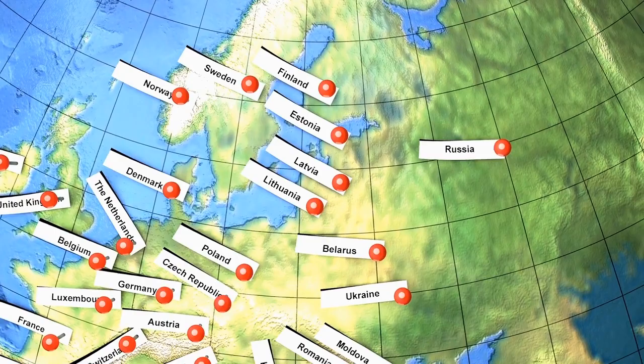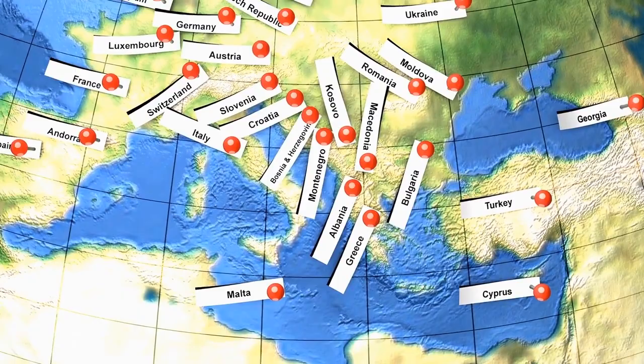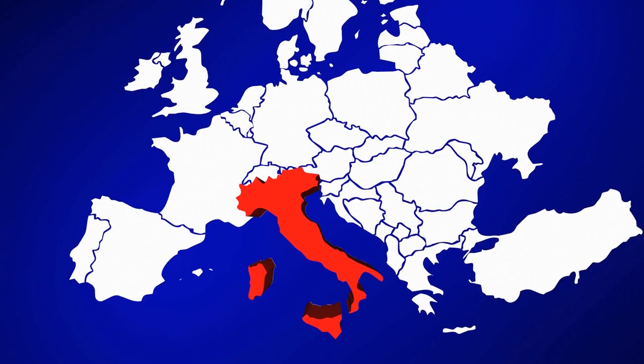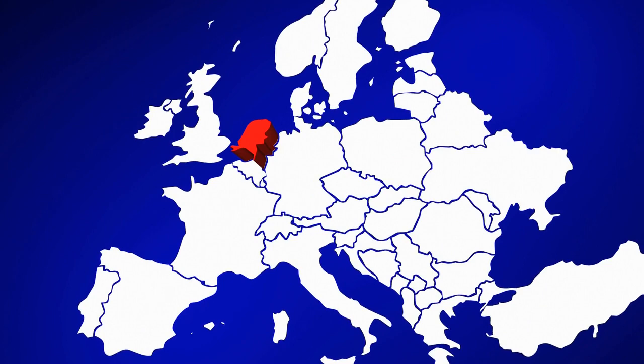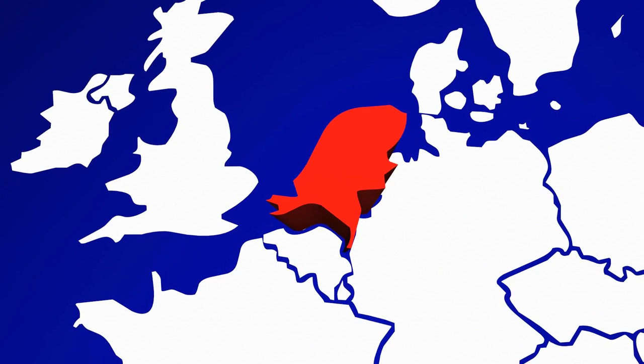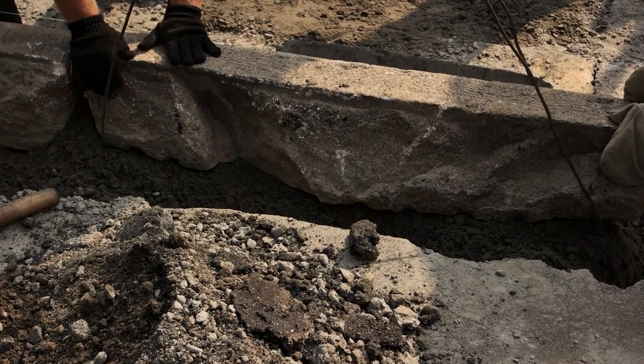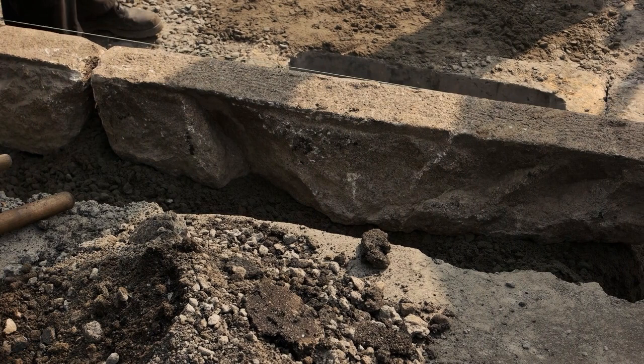What we know about European countries is that back then not all of them existed like they do now. For the Renaissance time period, there is no Germany, no united Italy, no United Kingdom, the Netherlands does not exist as an independent state, neither does Belgium. The 1500s is going to be laying down the foundation and cornerstones for the future nation-states of Europe.